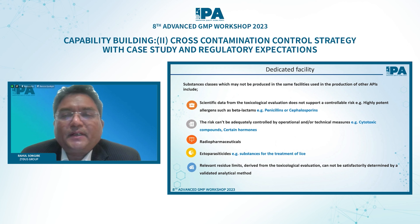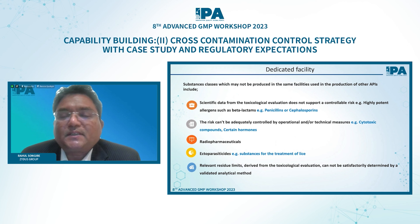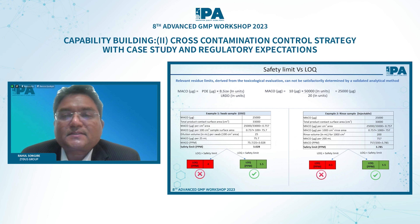When is a dedicated facility needed? When the scientific data from the toxicological evaluation does not support a controllable risk — like highly potent allergens such as penicillin and cephalosporin — then a dedicated facility is needed. When the risk can't be adequately controlled by operational or technical measures, for example cytotoxic and carcinogenic substances, radiopharmaceuticals, ectoparasiticide substances for the treatment of lice. And when relevant residual limits derived from the toxicological evaluation can't be satisfactorily determined by a validated analytical method — these are the circumstances under which we need a dedicated facility.